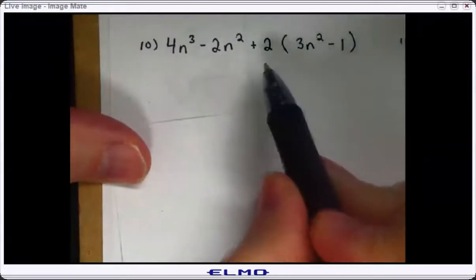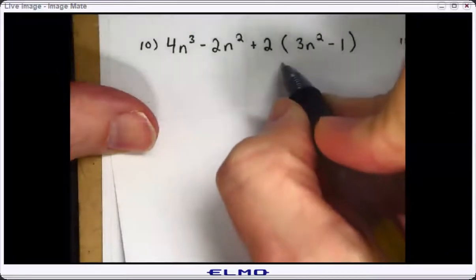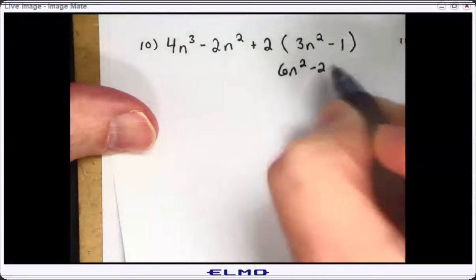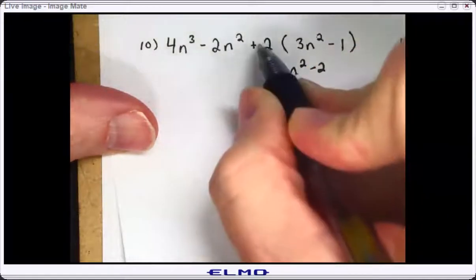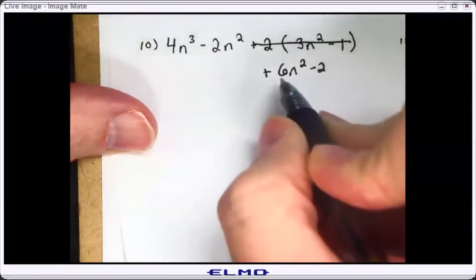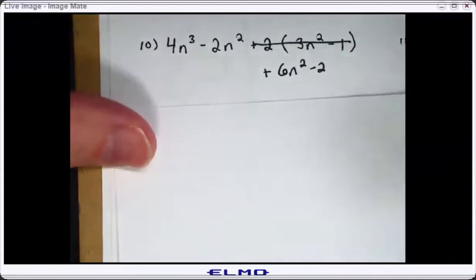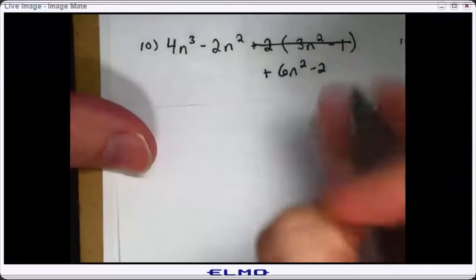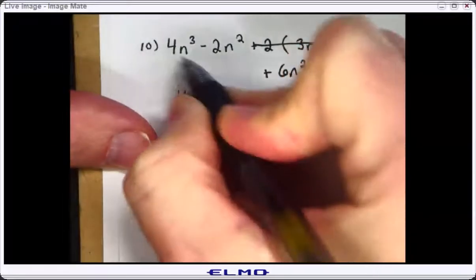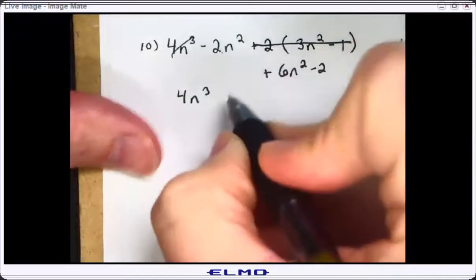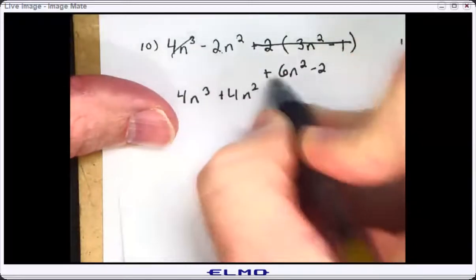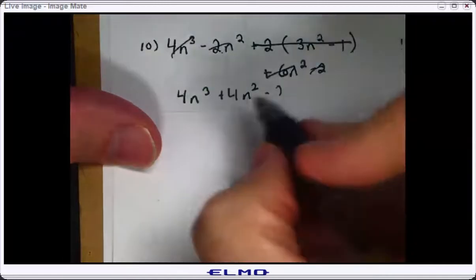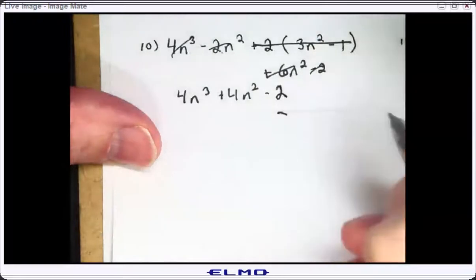Number ten. Can I do what's in the grouping first? No. So the next thing I do is distributive property. Two times three n squared is six n squared. Two times negative one is negative two. And this was a positive six. Now I have four terms. I look to combine like terms. I only have one cube, so I write it four n cubed. I have a couple of n squares — negative two plus six is positive four n squared. And I have one constant, negative two. So your answer is four n cubed plus four n squared minus two.